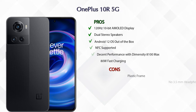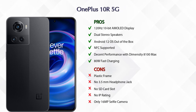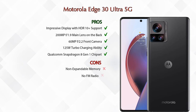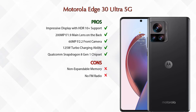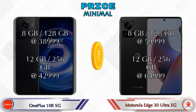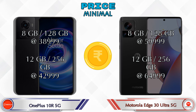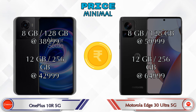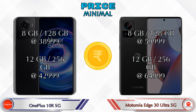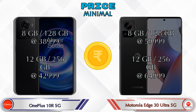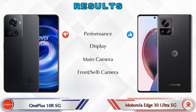The OnePlus 10R 5G has 6 pros and 5 cons, while the Motorola Edge 30 Ultra 5G has 5 pros and 2 cons. Both phones come in two variants. The 10R 5G is available at ₹38,999 for 8GB/128GB and ₹42,999 for 12GB/256GB. The 30 Ultra 5G is priced at ₹59,999 for 8GB/128GB and ₹64,999 for 12GB/256GB.